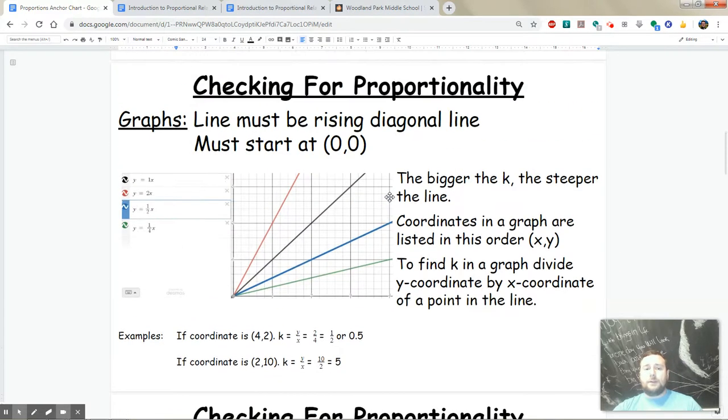How about a graph? How can I tell if a graph is proportional? Proportional graphs must be rising lines—a diagonal rising line—that must start at (0, 0). Note that the bigger the k, the steeper the line.